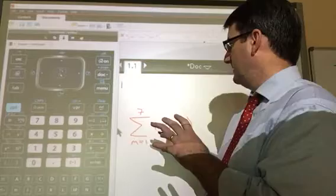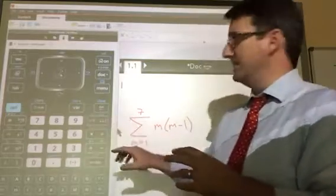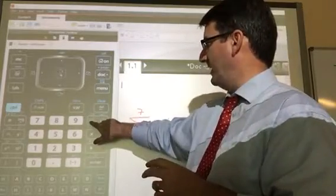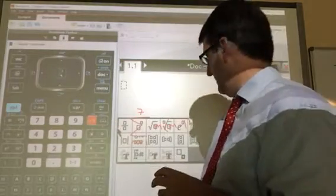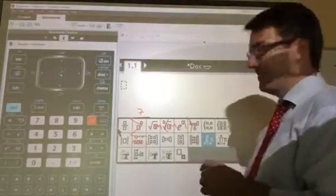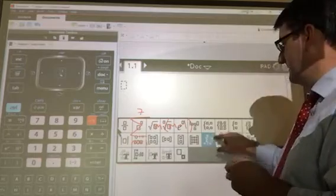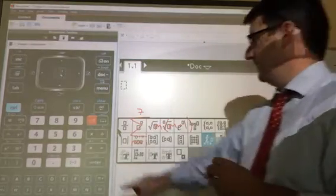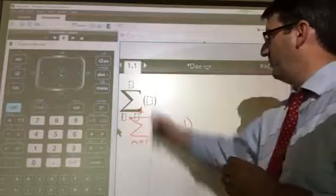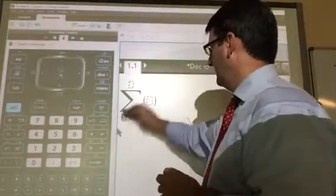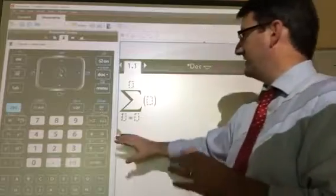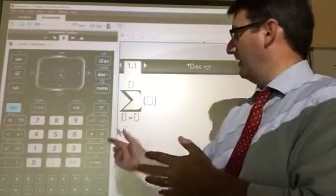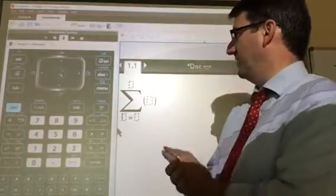Let's go ahead and plug this into the calculator. We're going to use this button here, the button right next to the 9. And then we're going to choose this sigma here. And it pulls up this big sigma with all the information to plug in.